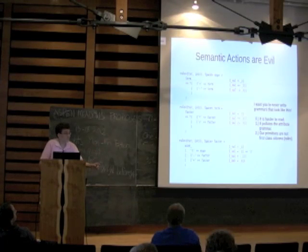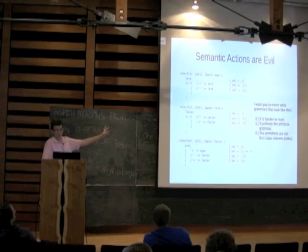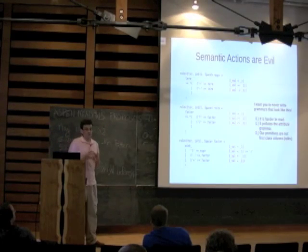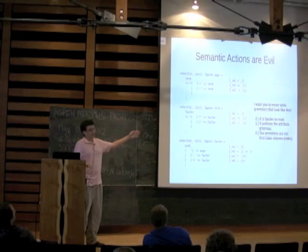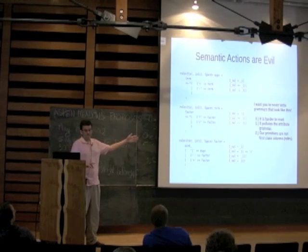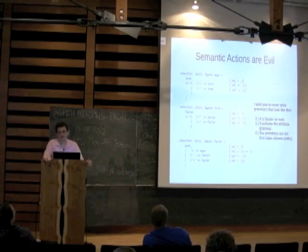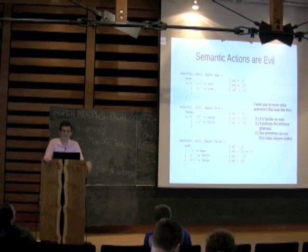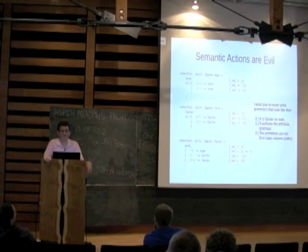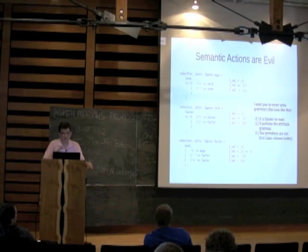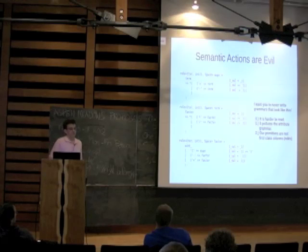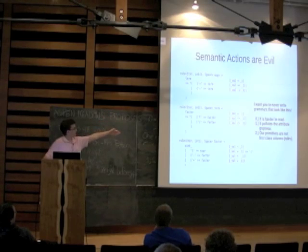I don't like it when people write grammars where you don't have the primitives of your AST — in this case, a plus node, a minus node, a division node, a multiplication node, and a unary negation and positive node. In this grammar, some of the atoms of our AST are not their own separate rules; they're embedded in the term, factor, and expression rules.